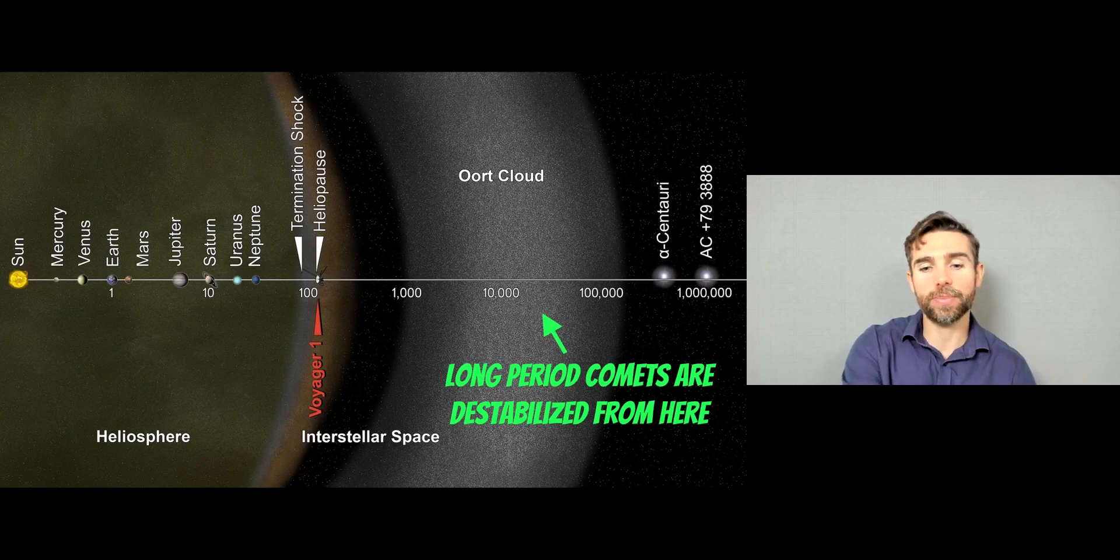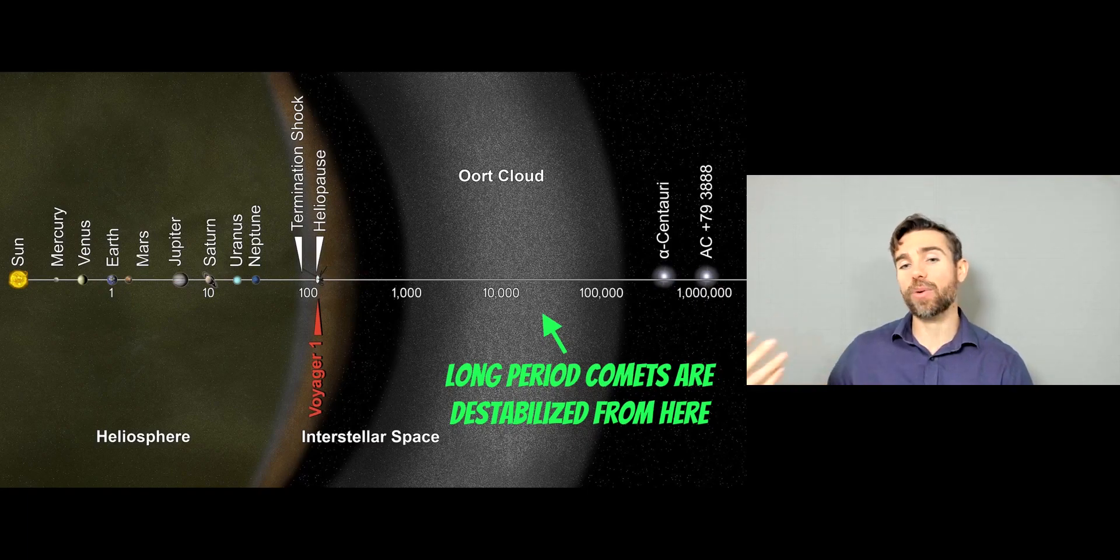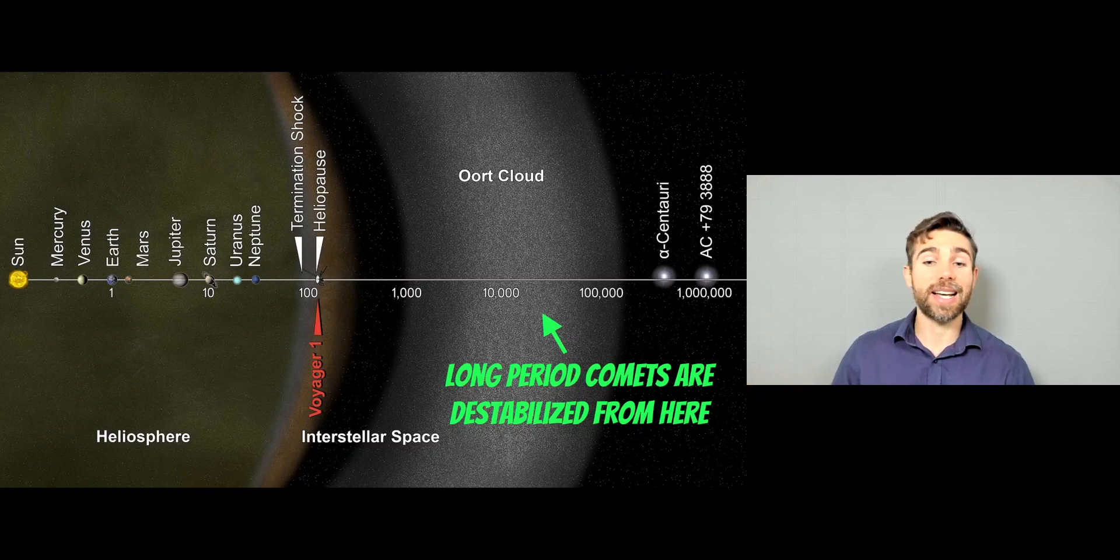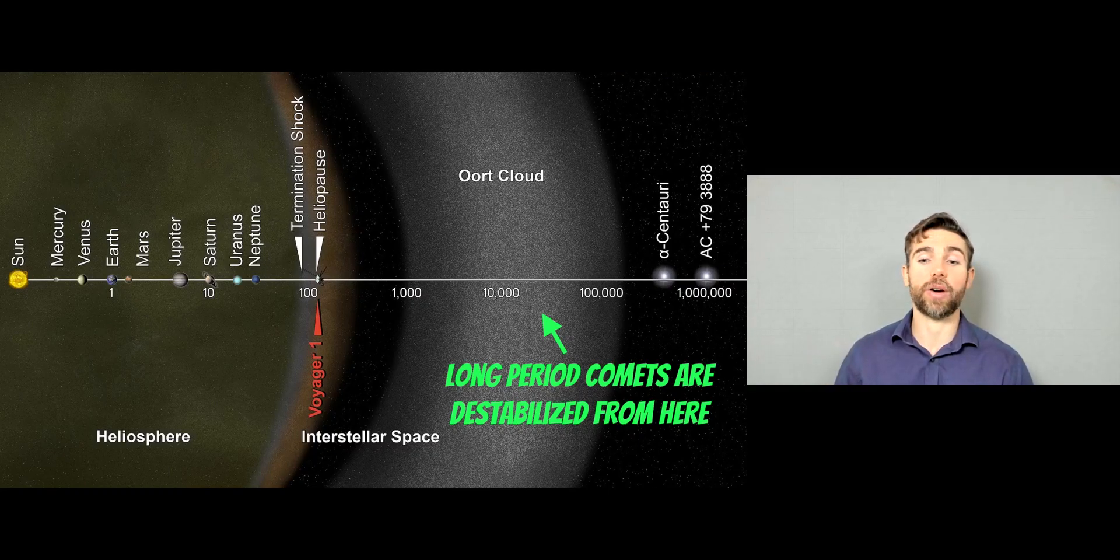So you've got the planets quite close to the sun. And then you have the Oort cloud further out. And this extends to the outer part of the sun's gravitational influence. And here, because it's a long way from the sun, the sun doesn't have a very large influence gravitationally on them. So anything external moving past has a greater effect on their orbits.